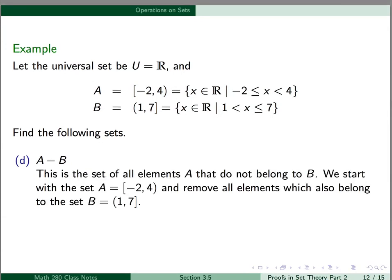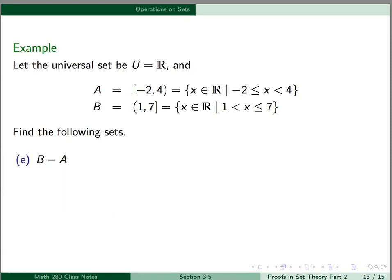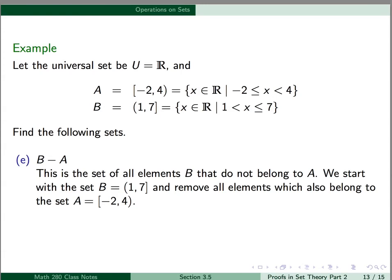A minus B is the set of all elements in A that do not belong to B. We start with set A and remove all elements that also belong to B. This gives the set of all real numbers satisfying -2 ≤ x ≤ 1, which in interval notation is [-2, 1]. The best way to see this is to draw the sets on a number line. B minus A is the set of all elements in B not belonging to A. Starting with B, the interval (1, 7], and removing elements that belong to A, which is [-2, 4), the result is the set of real numbers x such that 4 ≤ x ≤ 7, which is the interval [4, 7].